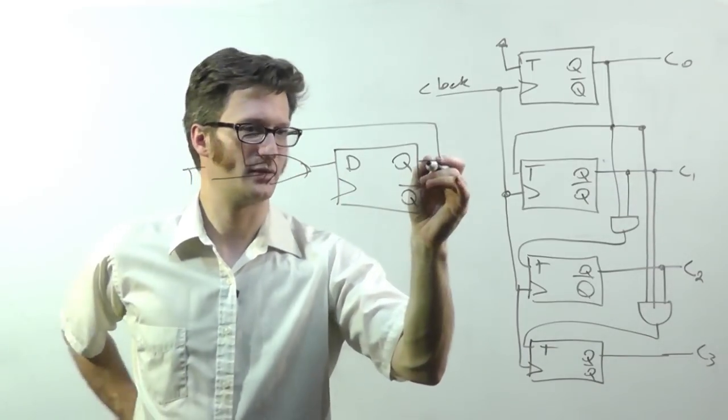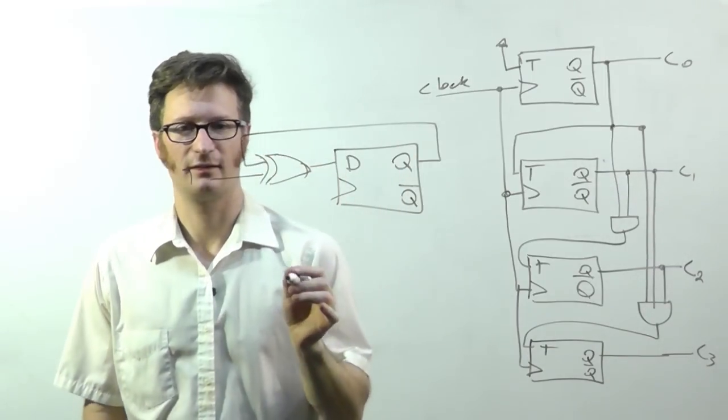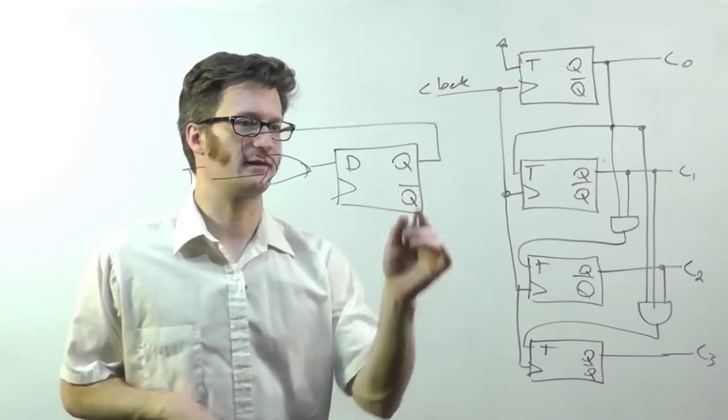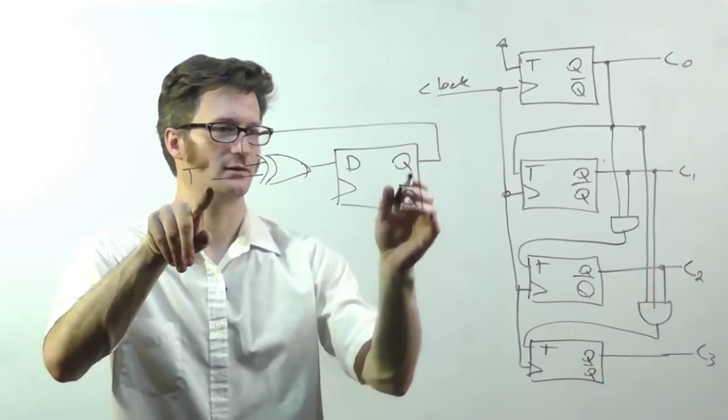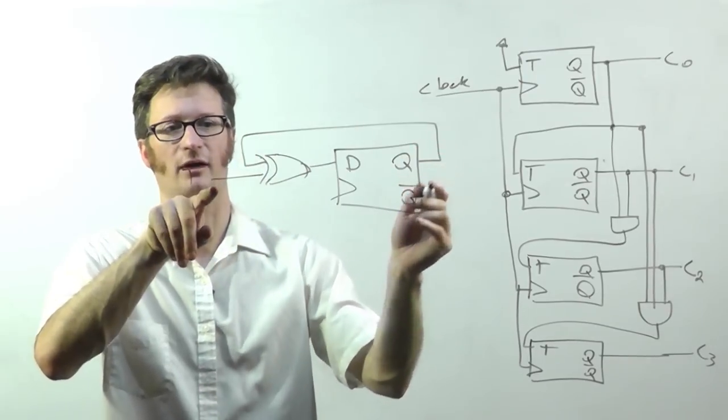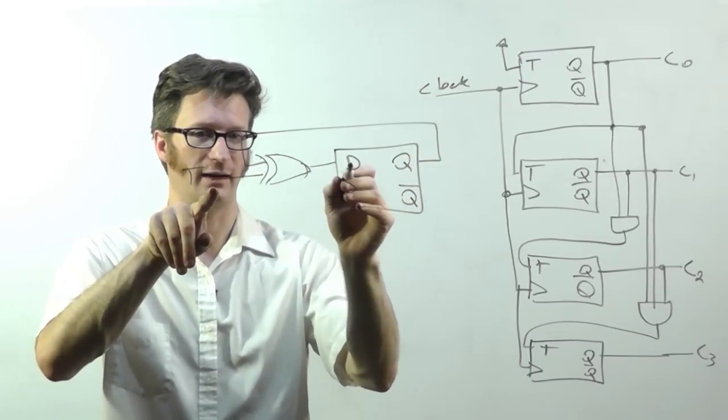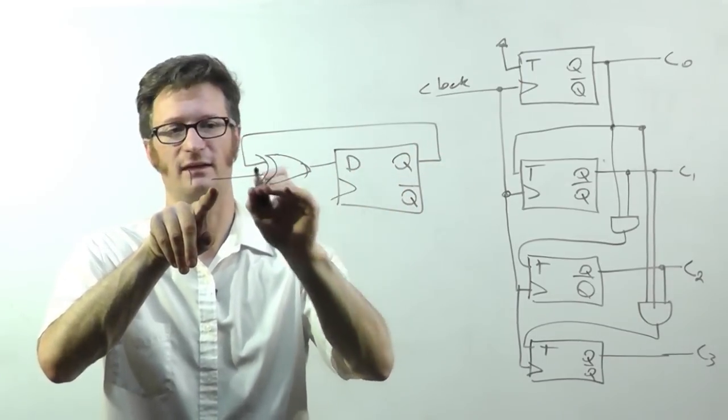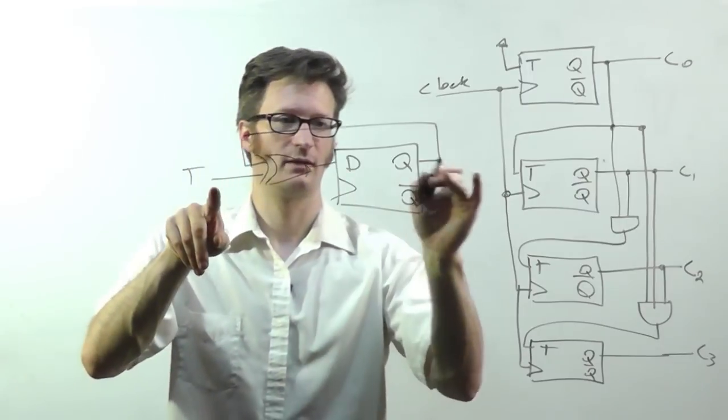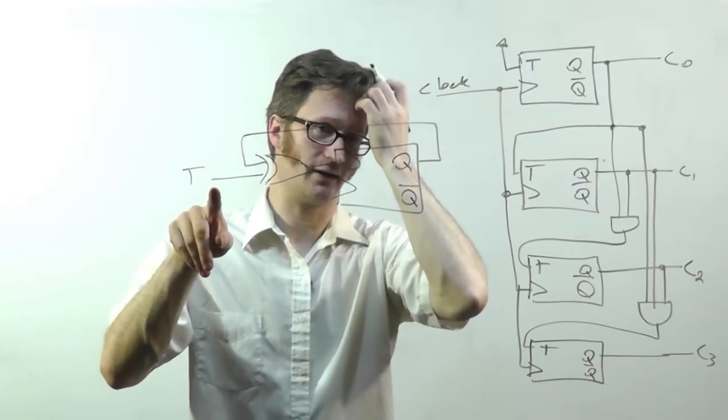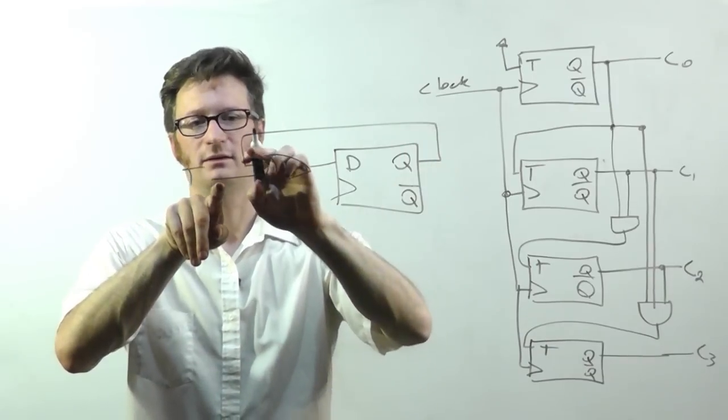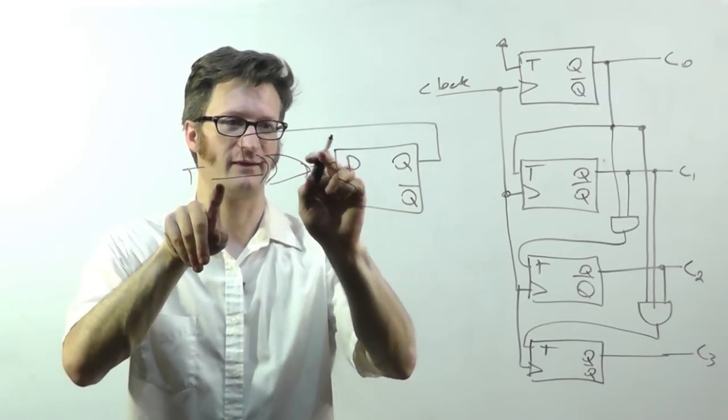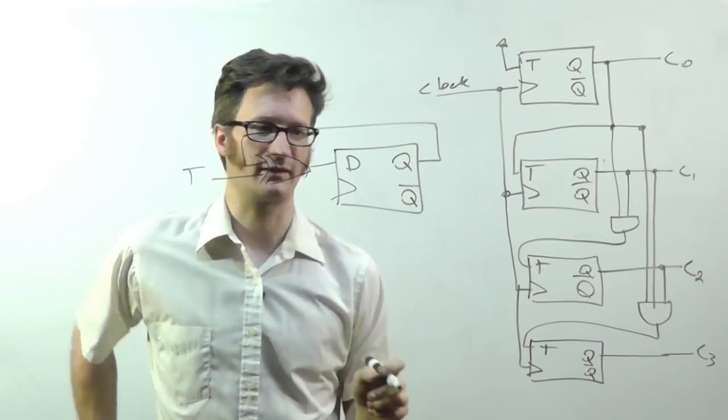So if I bring Q around here to here, let's say Q is one. If toggle is one, or let's say Q is zero. If toggle is one, then I get a one on D because of the exclusive OR. And then that transfers over to here on the next clock. So now it'll be one. If I have one exclusive OR one, that'll give me zero. So it just toggles like that.